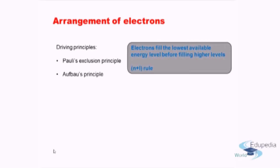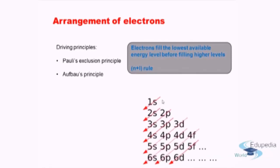Next is the Aufbau principle, which states that electrons fill the lowest available energy level before filling the higher energy levels — this is essentially energy minimization. The actual rule is: lower the sum of n plus l, lower the energy. This gives the filling order: 1s, then 2s, then 2p, then 3s, then 3p, then 4s — notably, 4s is filled before 3d because the n+l value for 4s is lower.